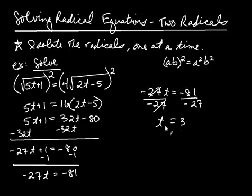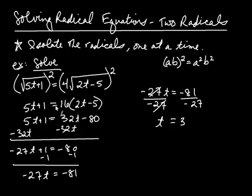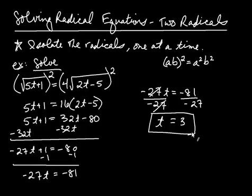Now this is your answer, but remember: whenever you square both sides, you have to check to make sure these numbers are not extraneous. If you take t equals 3 and plug it into the original equation — before squaring — you'll find that 3 makes the statement true. In this case it's not extraneous.